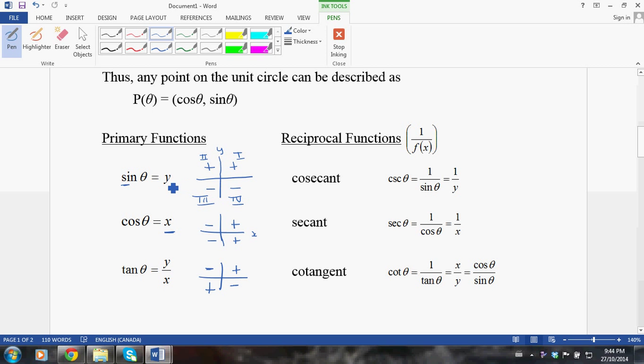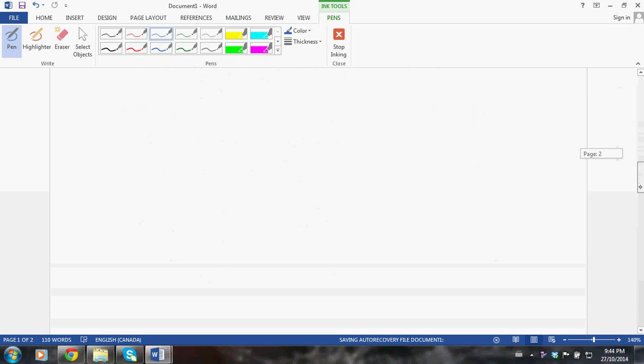Now, whatever is true about sine in terms of positive and negatives is also true for cosecant, right? Because when you do the reciprocal, it doesn't change the sign. 1 over 4, 4 over 1, they're both positive. Likewise, cos and secant, same pattern for which quadrant and same pattern for cotangent. So cotangent is positive in quadrant 1, positive in quadrant 3, but negative in 2 and 4.